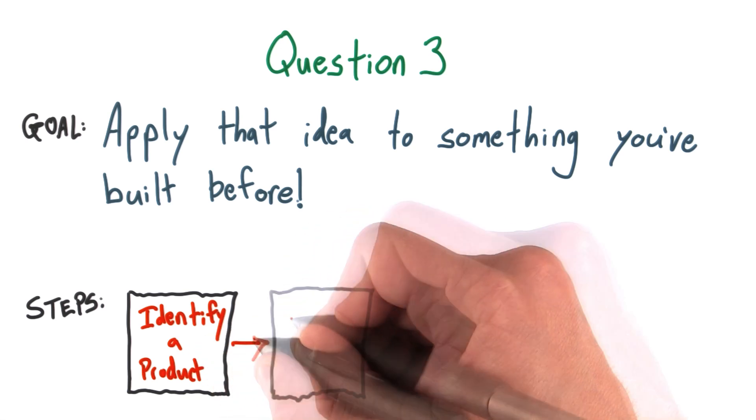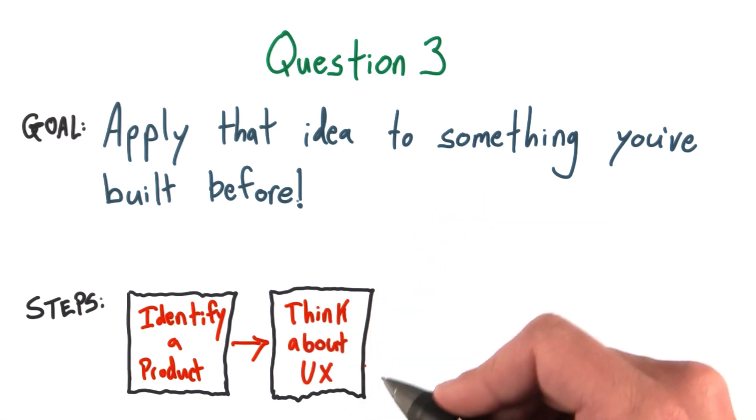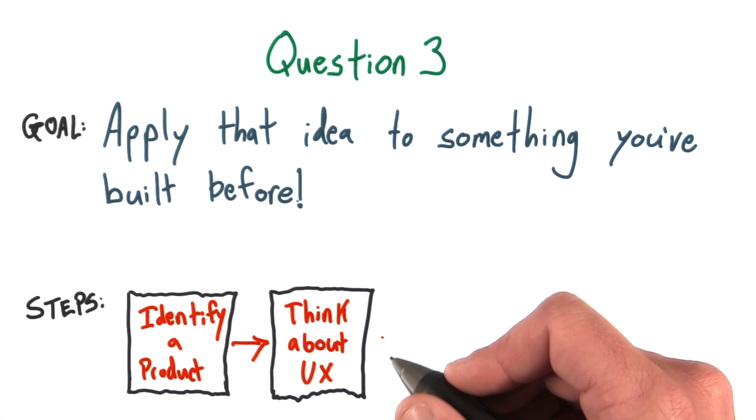Once you've decided on that, you'll think about what the intended UX was. And I'm using this word intended, even though there's definitely a chance you may not have explicitly thought about user experience. You probably had some implicit understanding of what you wanted this app or this product to feel like using.